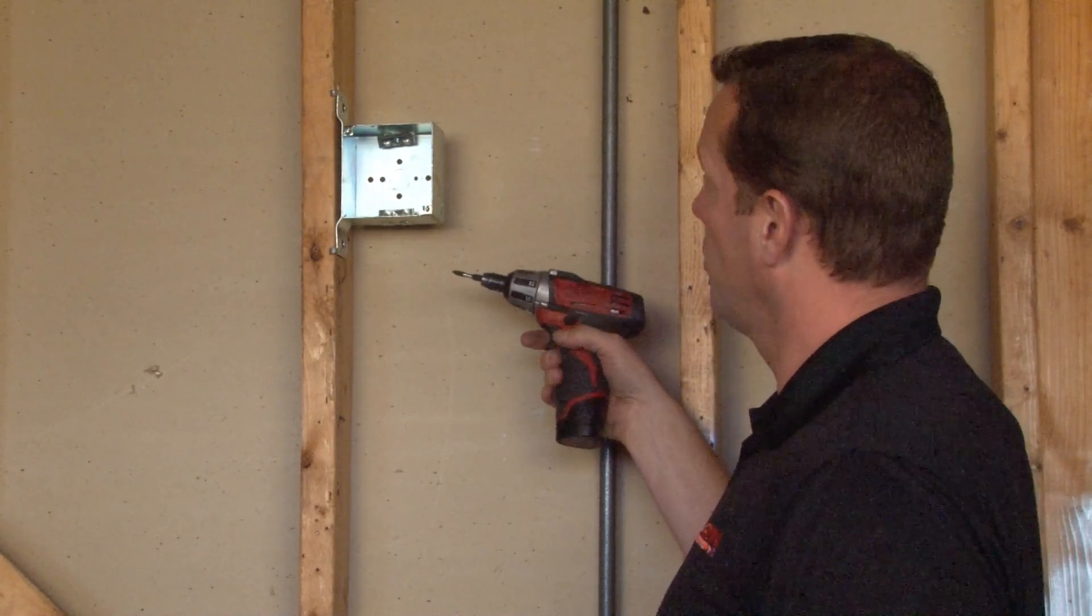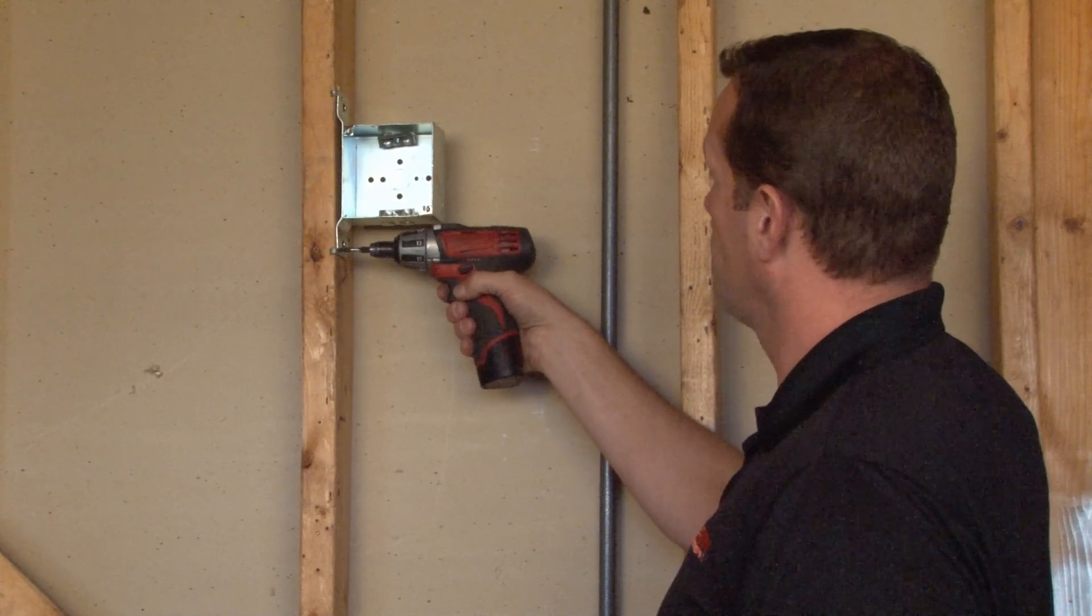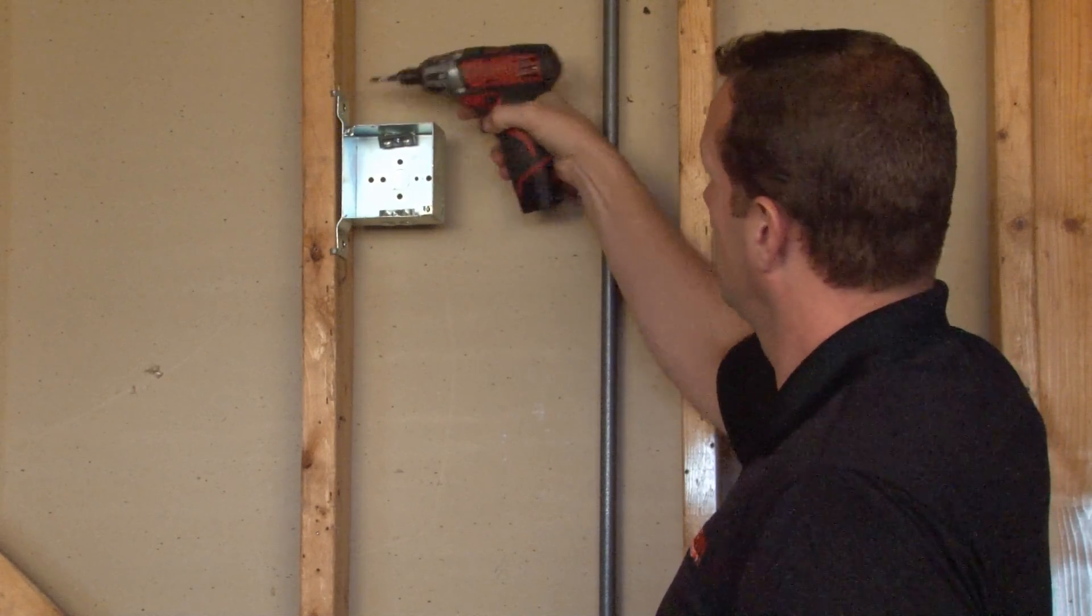Once the conduit run has a permanent location, the box can be secured through mounting holes in the bottom of the bracket and the top of the bracket by mounting a screw.